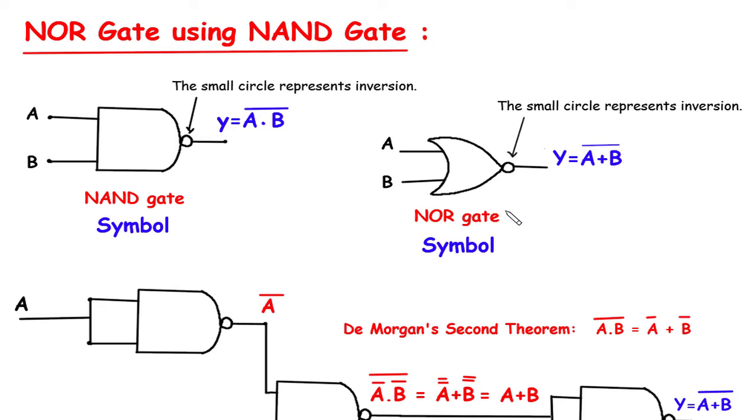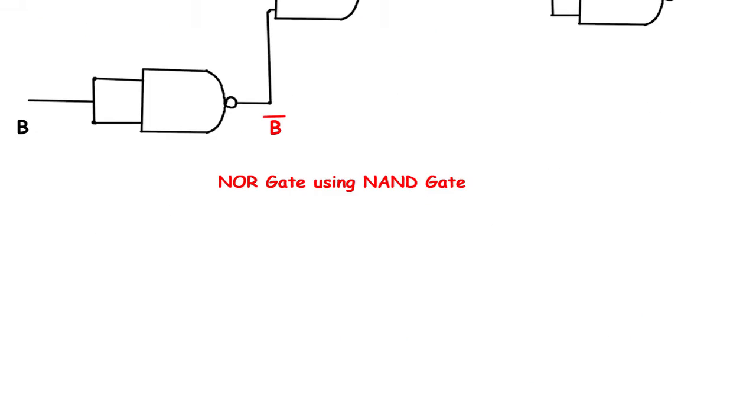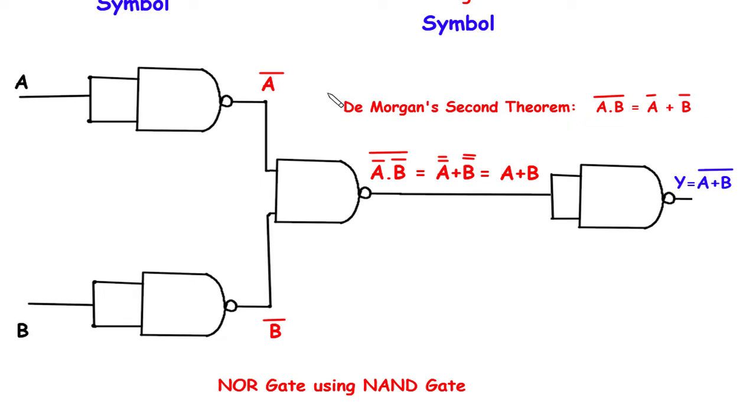The Boolean expression for NOR gate is y equals A plus B whole bar. This is the NOR gate using NAND gate.